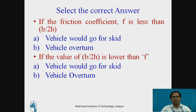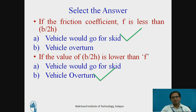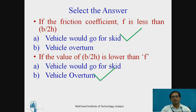Pause the video and answer this question: When f is less than B/2H, will the vehicle skid or overturn? And when B/2H is less than f, will the vehicle skid or overturn? The correct answers are: when f < B/2H, the centrifugal ratio is exceeded first by f, so the vehicle would go for skid, not overturn. When B/2H < f, the value B/2H is less than the centrifugal ratio threshold, so the vehicle will go for overturn, not skid.